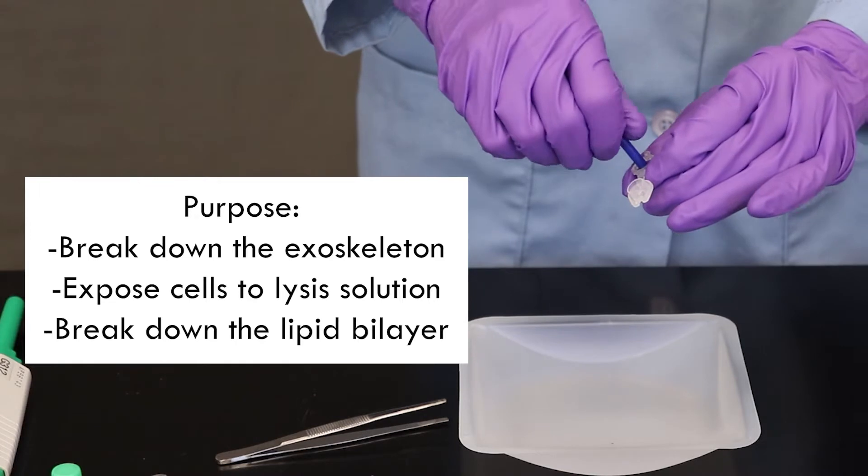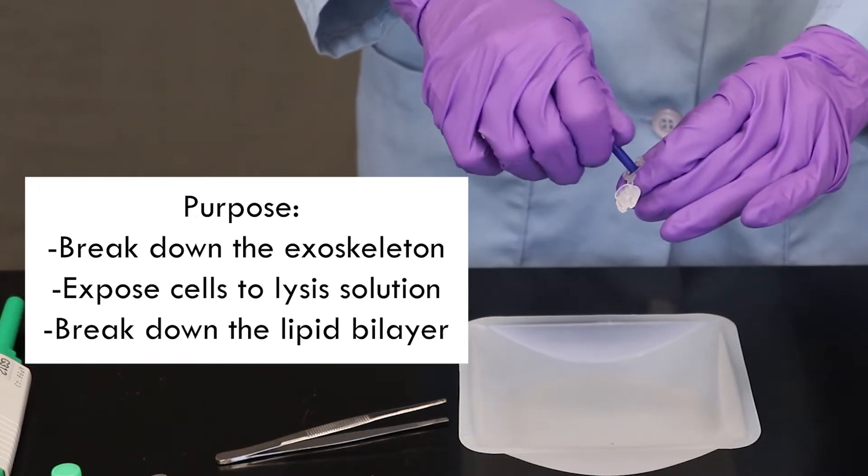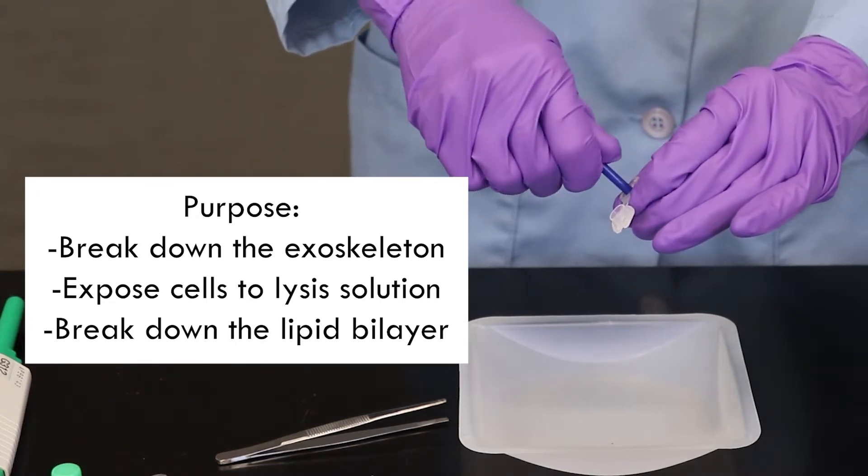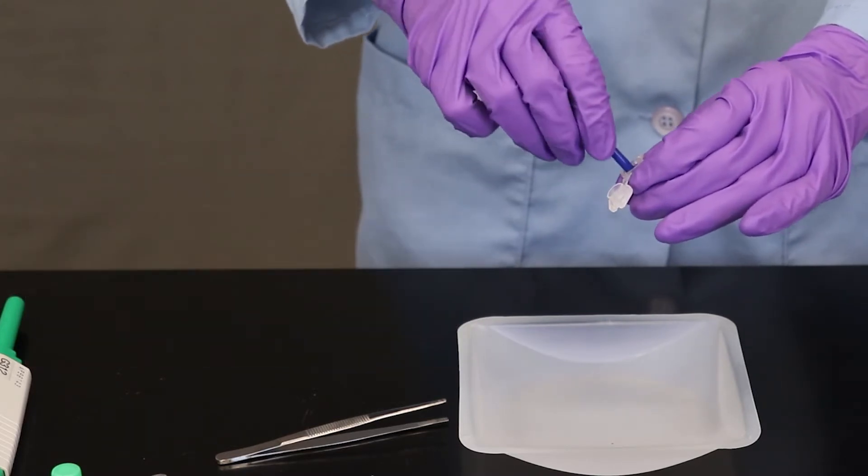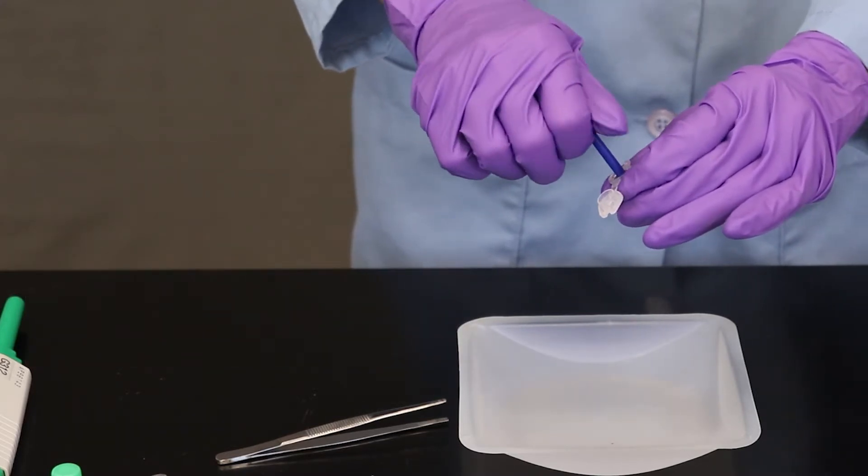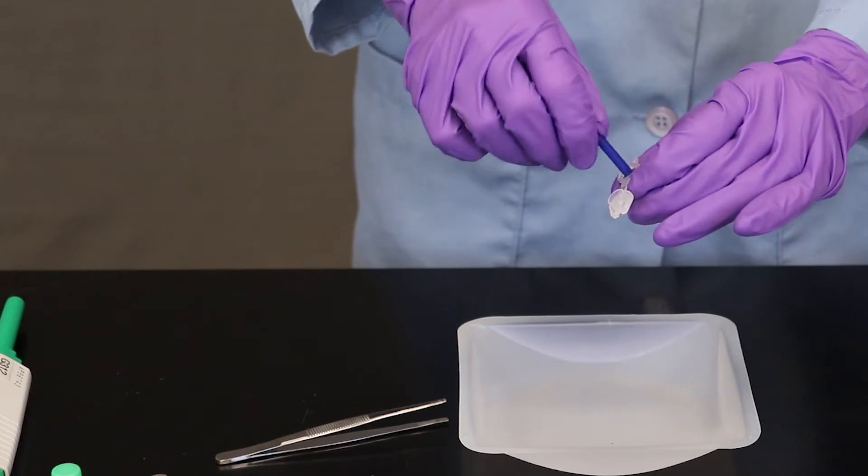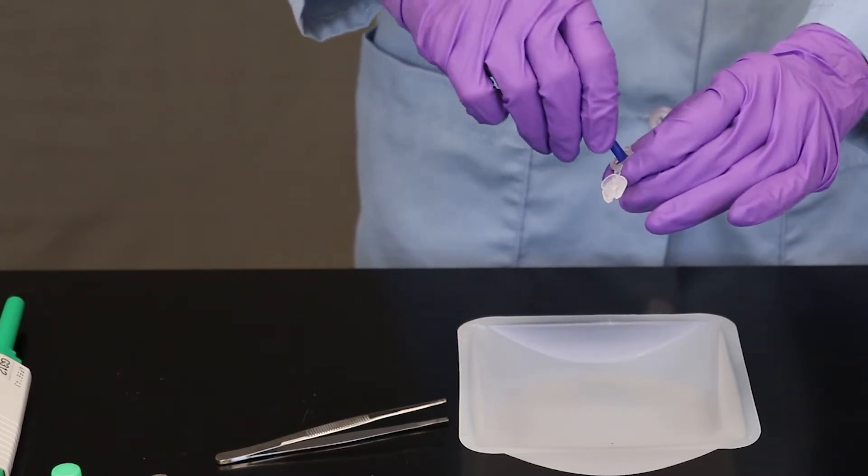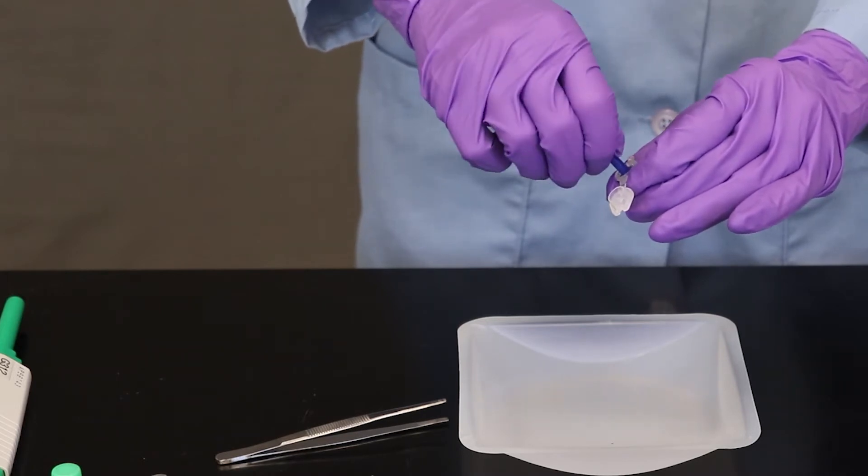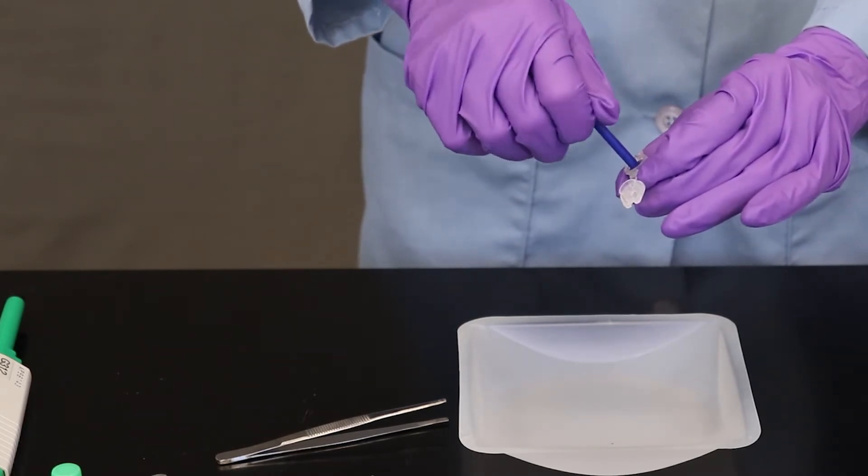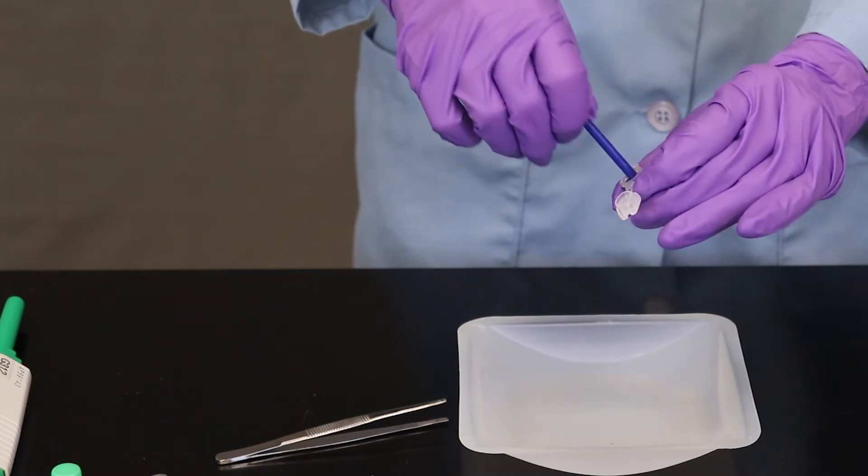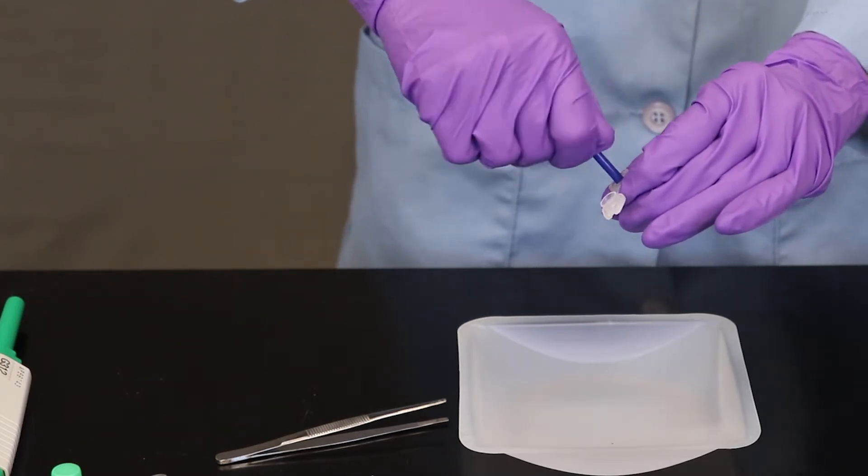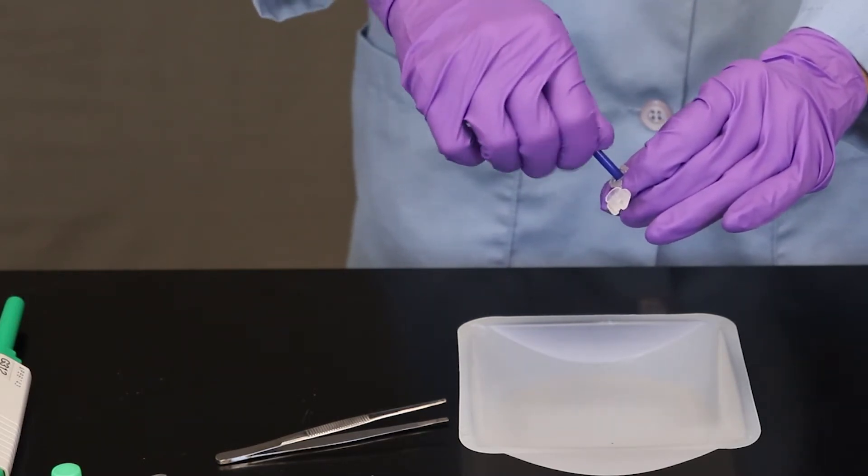And the purpose of this is to break down the exoskeleton so that it can expose the cells to the lysis solution. And the lysis solution with the detergent will help to break apart the lipid bilayer of the cell membrane. So just like dish detergent breaks up grease in dish water, this detergent should break apart the cell membranes. So the hope is to expose those cells so we can break them down and get the DNA out of them.